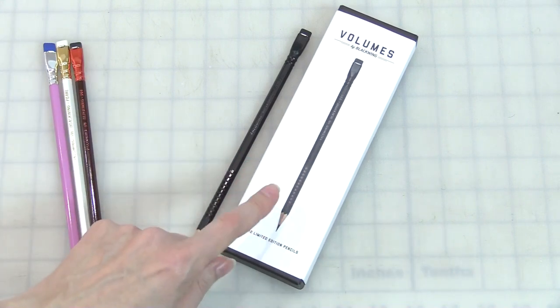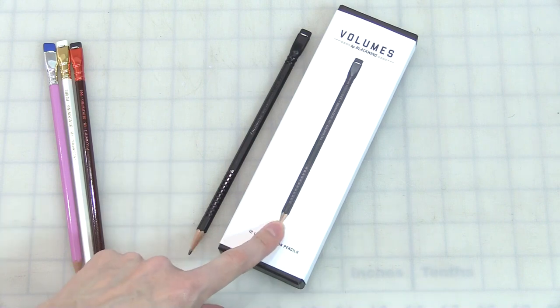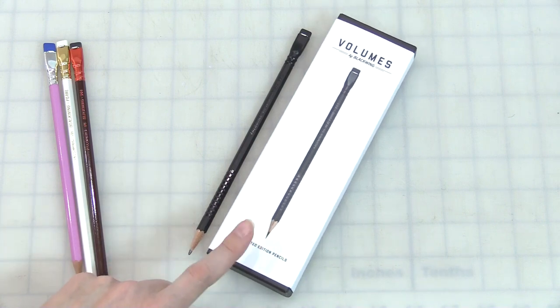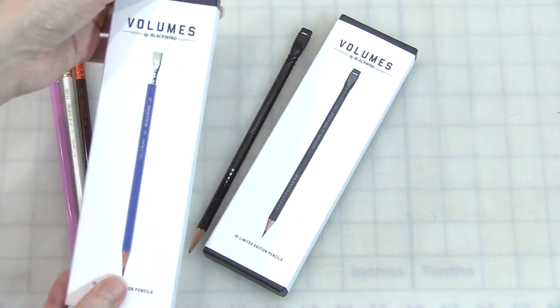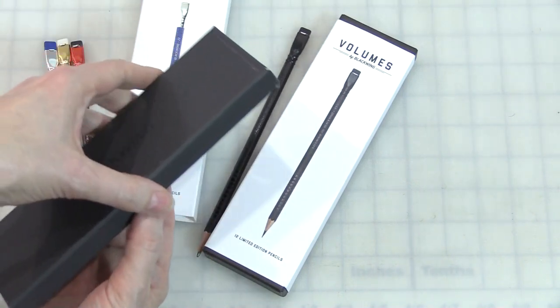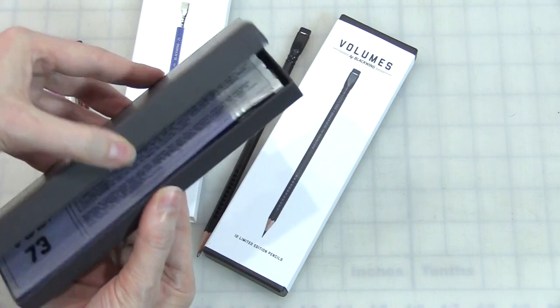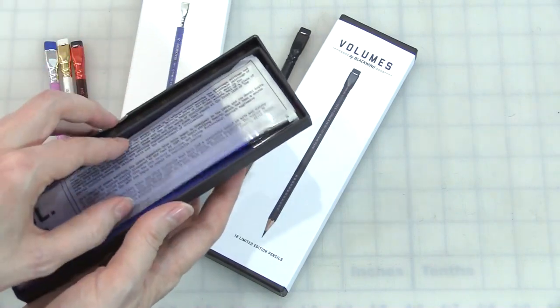If you're like me and go through erasers faster than you actually go through the pencil, you can put a completely new eraser right on it and finish the pencil all the way down to the nub if you want. The Palominos, they're just a lot of fun.